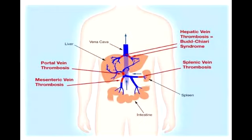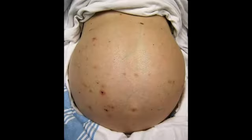What is ascites? Ascites is the accumulation of fluid in the peritoneal cavity.